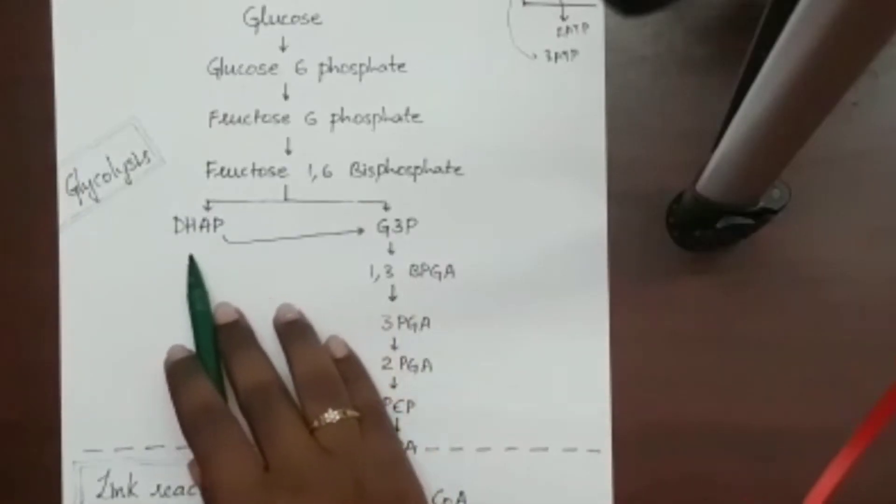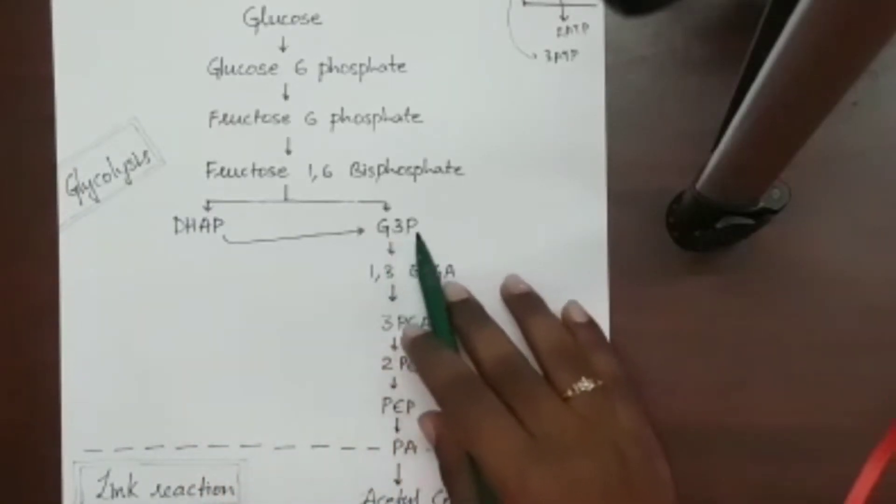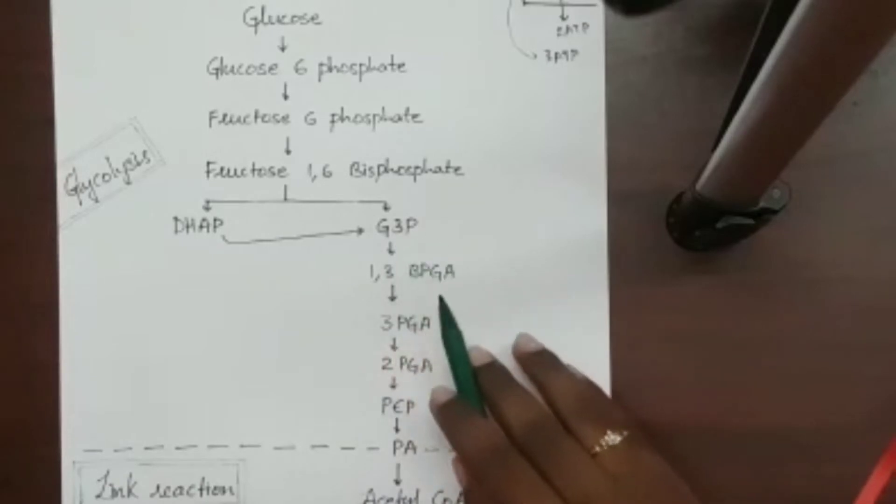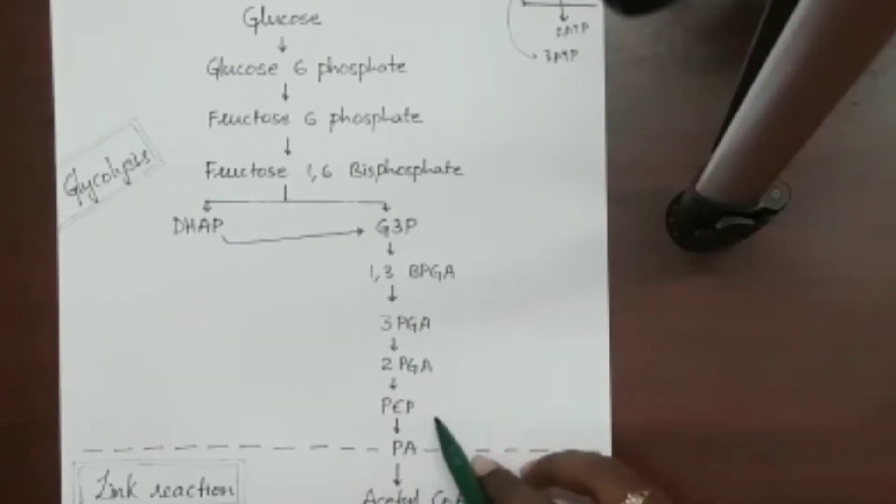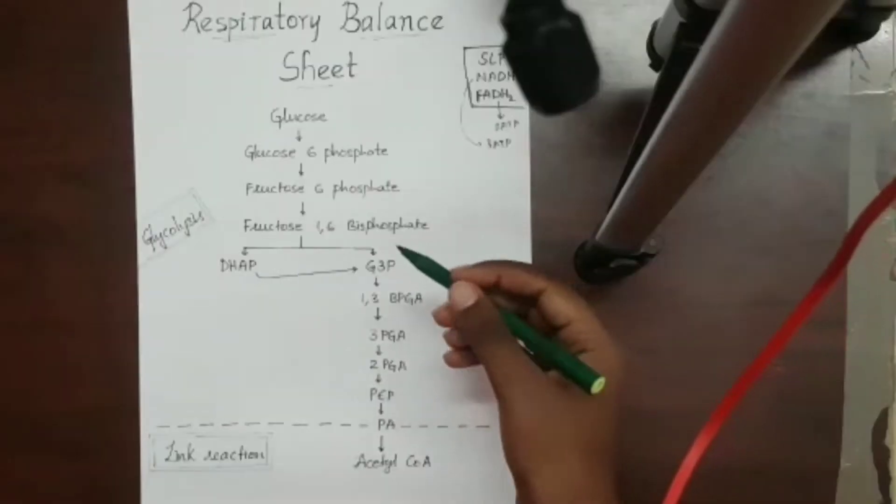DHAP is dihydroxyacetone phosphate. G3P is glyceraldehyde 3-phosphate. 1,3BEPGA is bisphosphoglyceric acid. PGA is phosphoglyceric acid. PEP is phosphoenol pyruvic acid and PA is pyruvic acid.